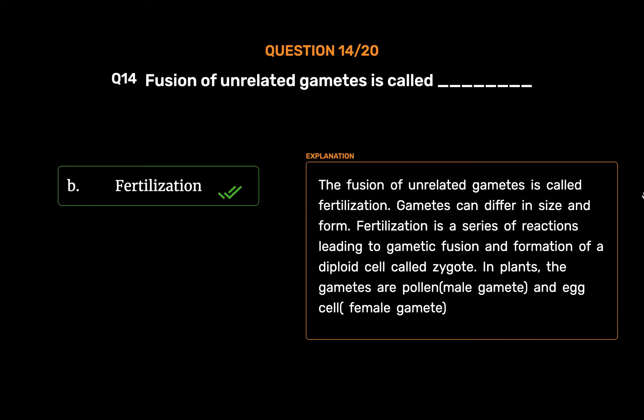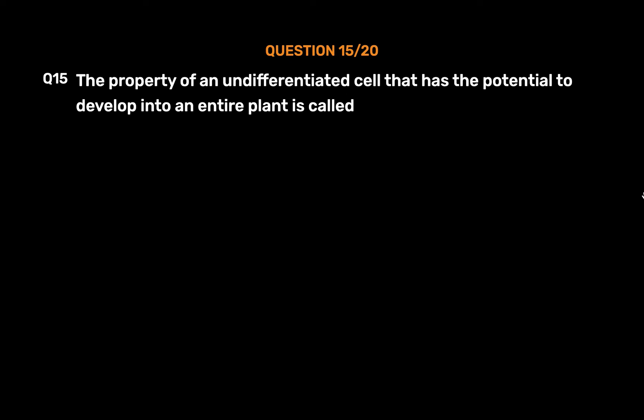The fusion of unrelated gametes is called fertilization. Gametes can differ in size and form. Fertilization is a series of reactions leading to gametic fusion and formation of a diploid cell called zygote. In plants, the gametes are the pollen (male gamete) and egg cell (female gamete).